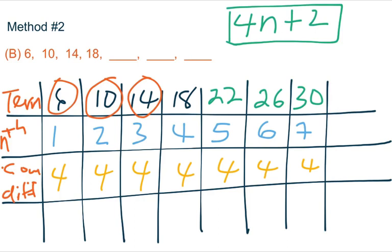Wherever n is, we put the term in. So if we want to find the tenth term, we put ten there. So four times ten, forty plus two, forty-two. So the tenth term in this sequence will be forty-two.